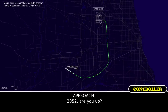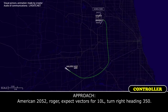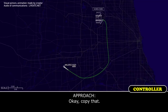2052, are you up? Affirmative, 2052 is up. American 2052, roger, expect vectors for 10 left, turn right heading 350. 350, we have the equipment standing by, we're planning on taxiing out the runway, we have no abnormal indications on the right engine now. Okay, copy that.